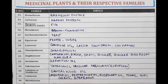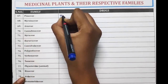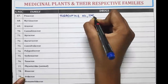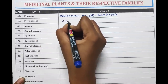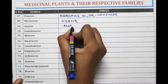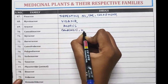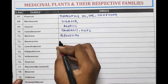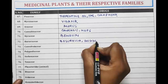Myristicaceae is the family of Nutmeg. Pinaceae is the family of Turpentine Oil, Tar, and Colophony. Myrsinaceae is the family of Vidang. Araceae is the family of Acorus and Cannabinaceae is the family of Cannabis and Hops. Thymelaeaceae is the family of Benzoin. Burseraceae is the family of Boswellia, Guggul, and Myrrh.